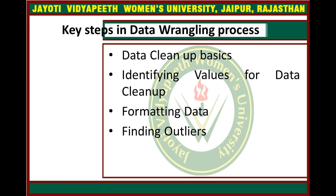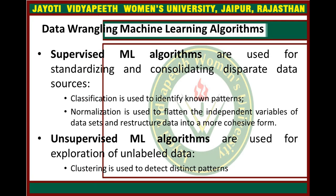The next topic is data wrangling and machine learning algorithms. The following types of machine learning algorithms are at play. First, supervised machine learning algorithms are used for standardizing and consolidating disparate data sources — classification is used to identify known patterns, and normalization is used to flatten independent variables and restructure data into more cohesive forms. Second, unsupervised machine learning algorithms are used for exploration of unlabeled data, where clustering is used to detect distinct patterns.